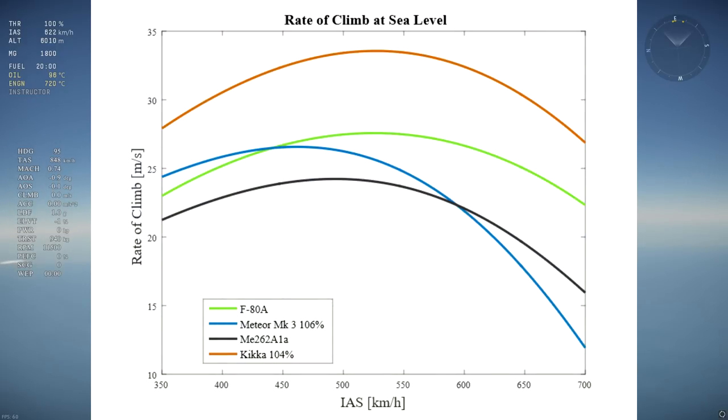The graph you see here is the result of the simulation for the rate of climb as a function of speed at sea level. This graph gives the optimal climb speed for these aircraft and shows which aircraft has the best rate of climb. The Kika climbs significantly better than its competition, followed by the F-80, the Meteor, and then the ME262.